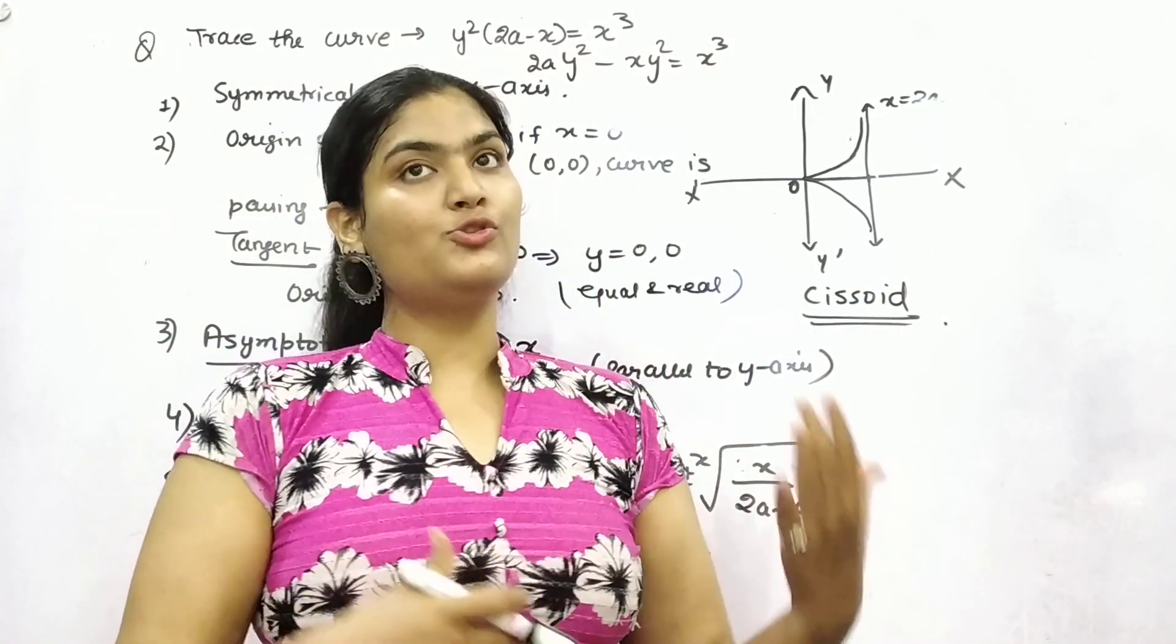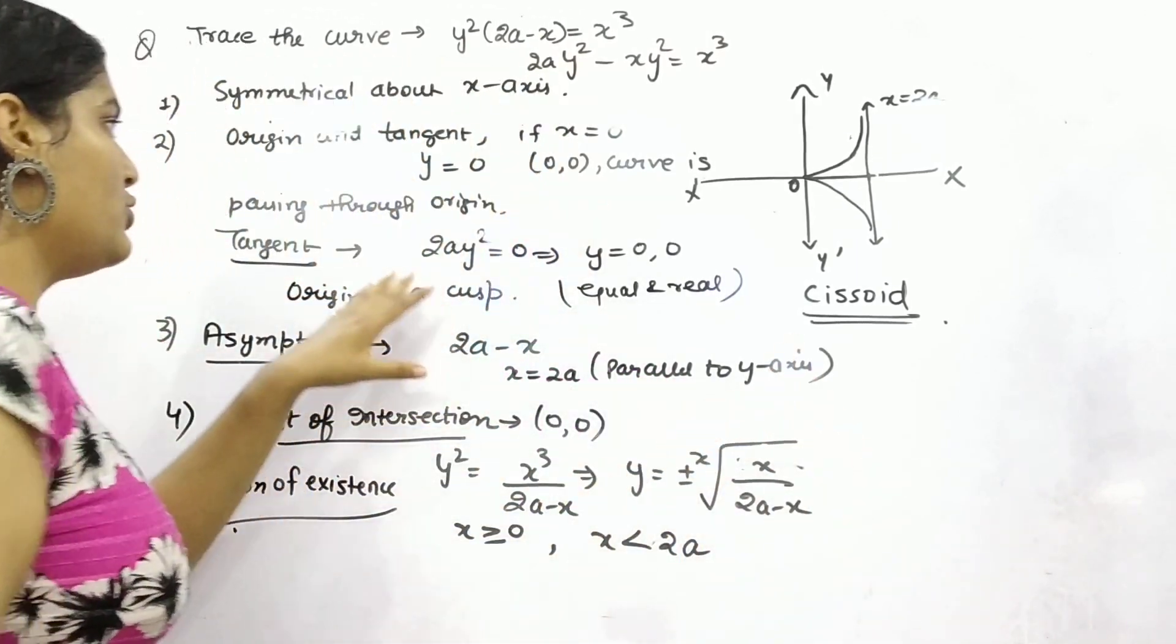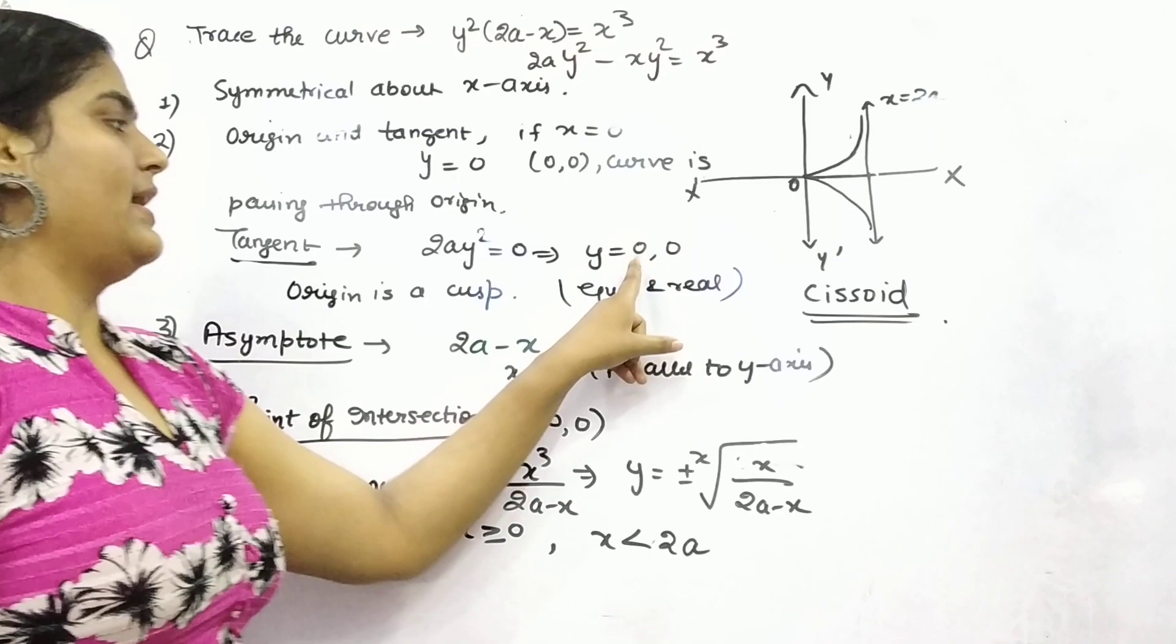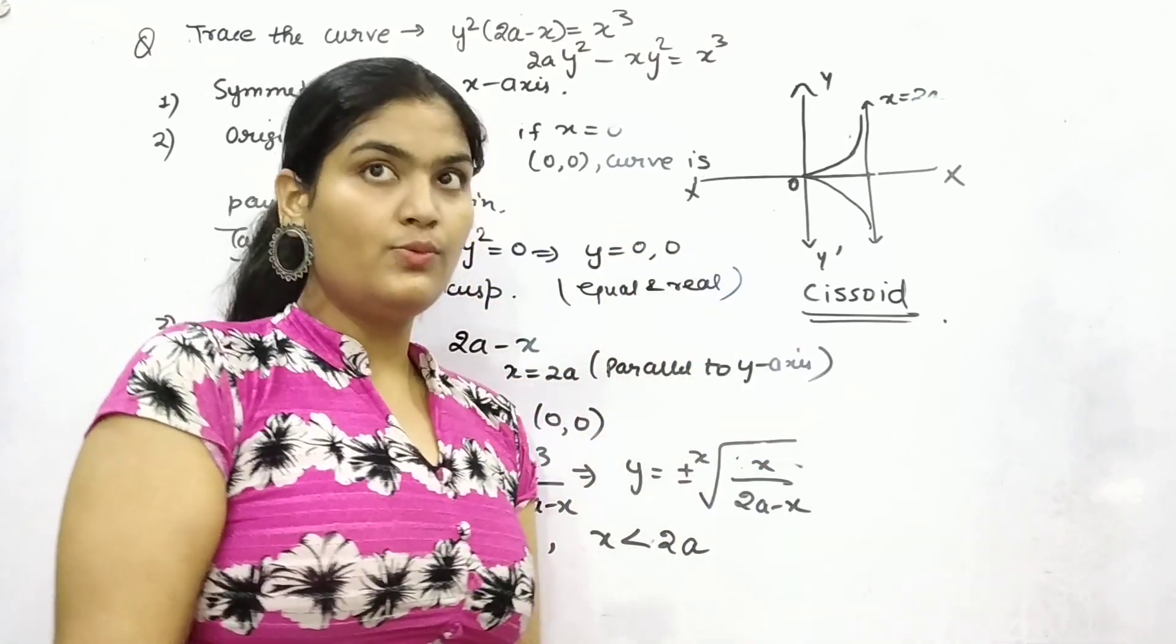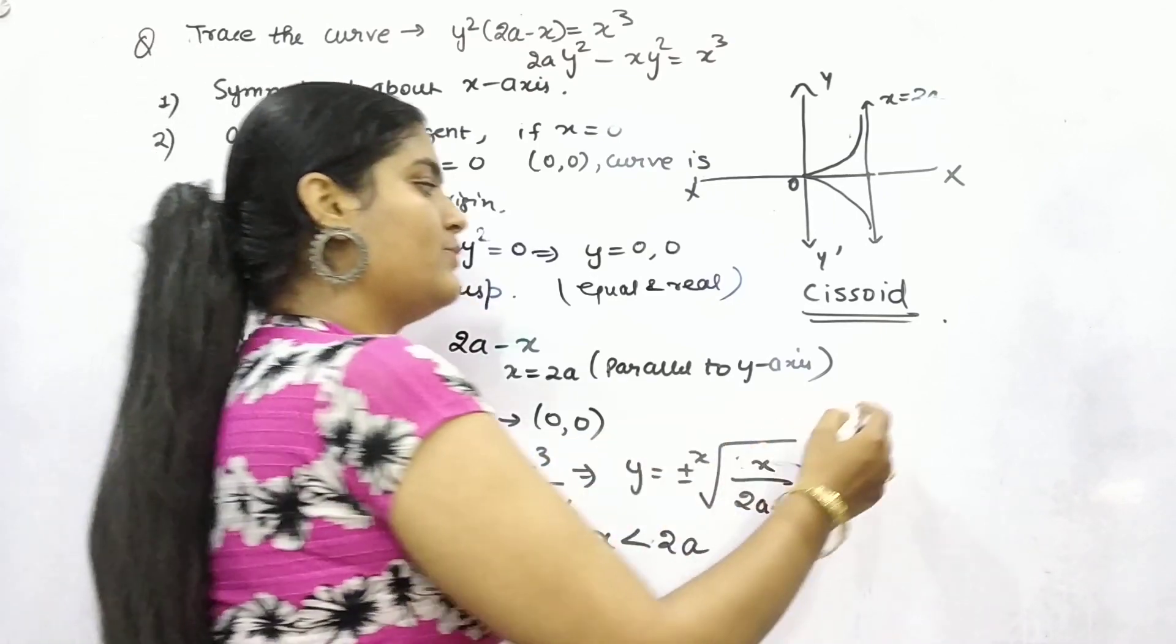I hope you understand how to trace the curve. You can do some more questions. It may be a chance that you will get your tangent, like let's say ±2, different values.